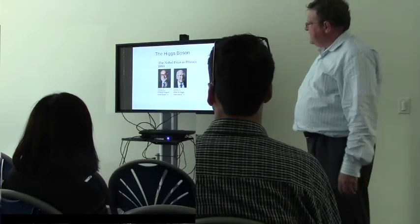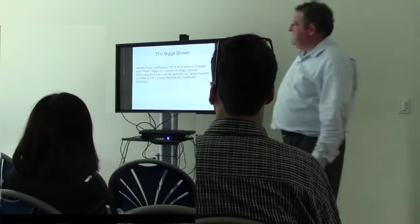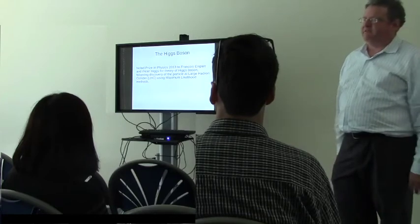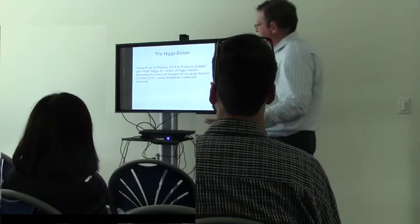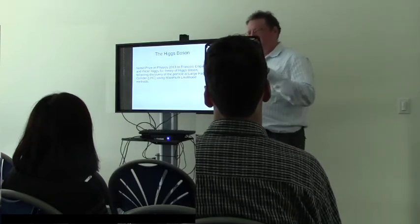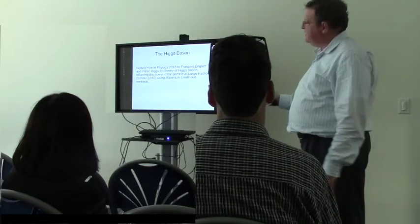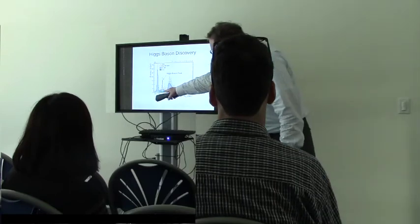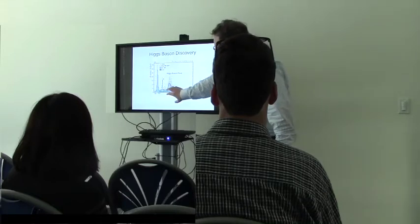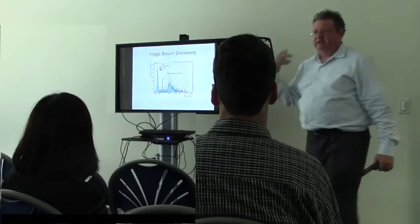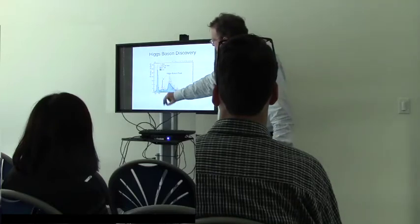The Higgs boson discovery at the Large Hadron Collider won the Nobel Prize in 2013. The Higgs is a particle predicted by the standard model of physics, which unifies electromagnetism and the weak nuclear force. The discovery plot shows the peak from the Higgs boson. You do a maximum likelihood fit accounting for background processes that might fake the Higgs boson — creating a spurious peak — and the method estimates the signal strength, the mass at which it occurs, and properties of the particle.